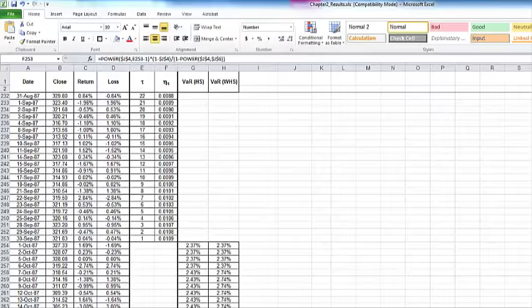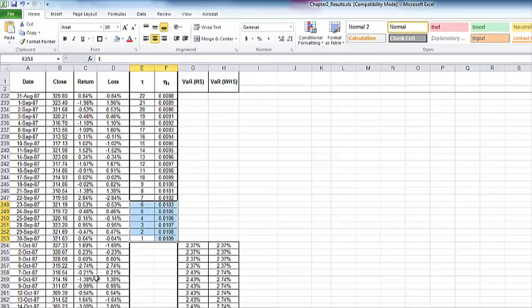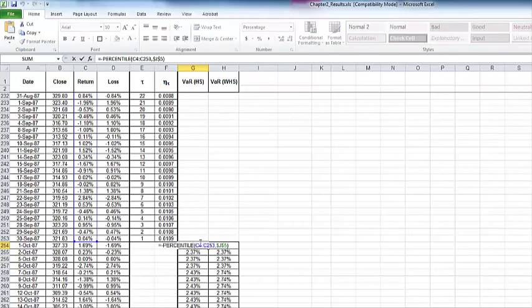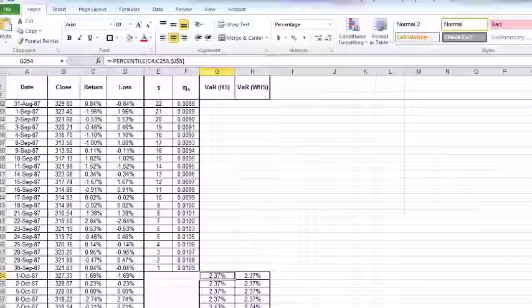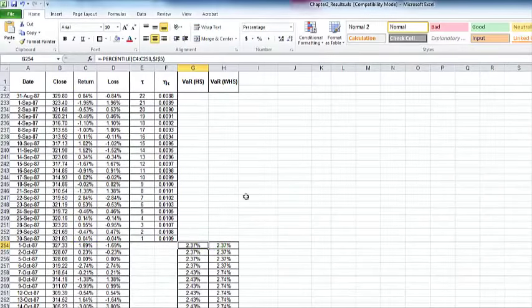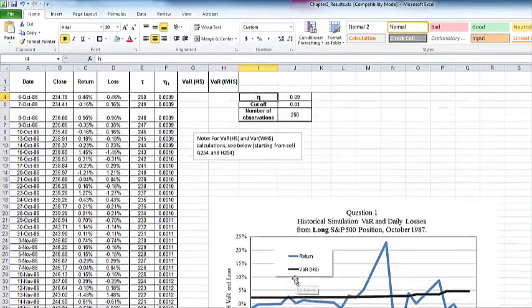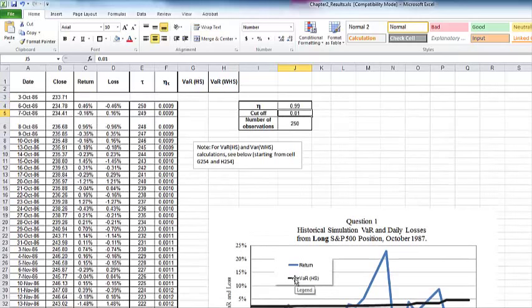We're going to use this weight to compute the value at risk for October 1st, 1987. Here is the value at risk using historical simulation. It goes from C4 to C253, takes the percentile of the last 250 days at J5, the 1% level.